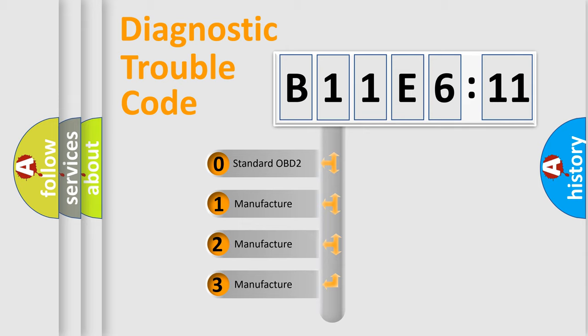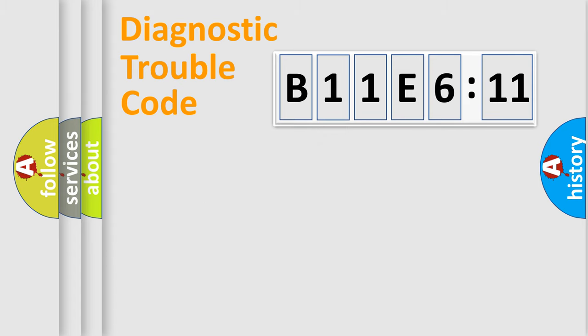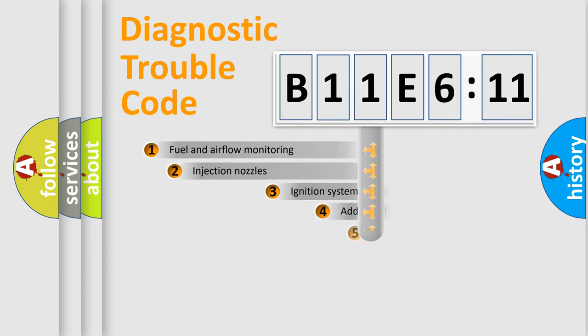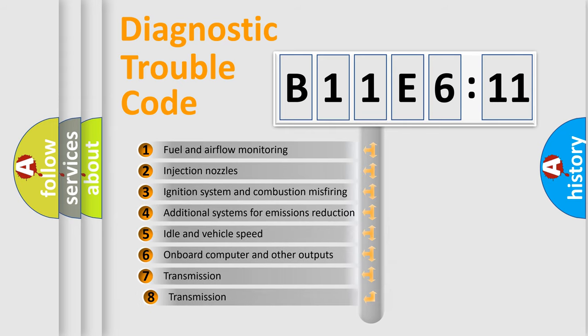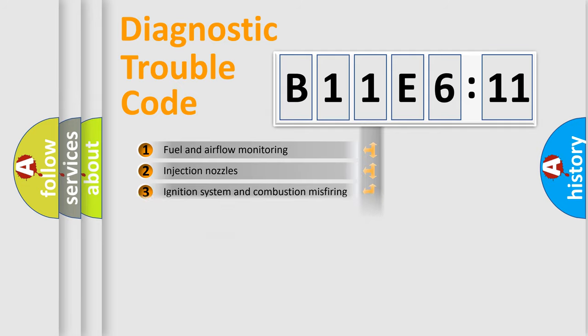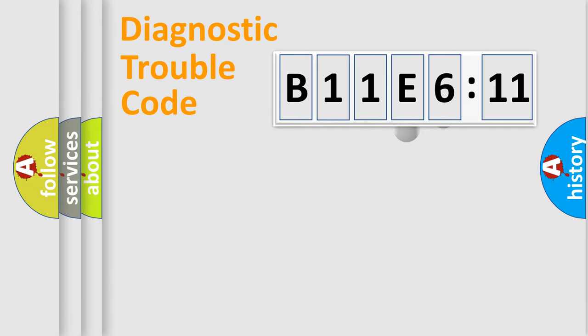If the second character is expressed as zero, it is a standardized error. In the case of numbers 1, 2, or 3, it is a more prestigious expression of the car-specific error. The third character specifies a subset of errors. The distribution shown is valid only for the standardized DTC code. Only the last two characters define the specific fault of the group.